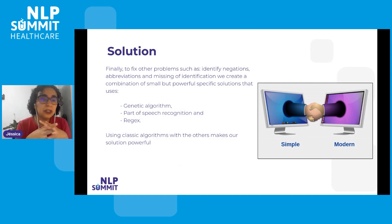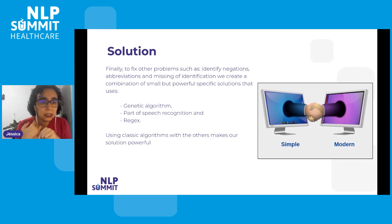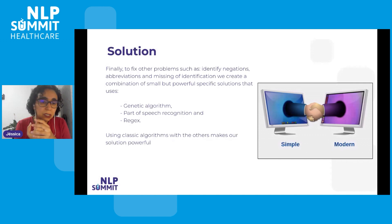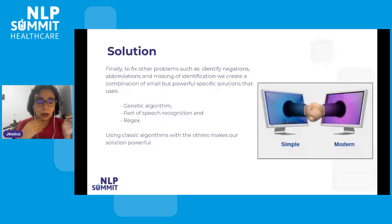Finally, after extracting all this information, we apply additional simpler but powerful algorithms to treat the other problems mentioned earlier. The first is a genetic algorithm to treat abbreviations. For the negation part, we use a part-of-speech recognition approach. We also use a lot of regex for specific cases where it is faster, and for terms that don't change much — it's more optimized to use regex than to create a specific model for that.